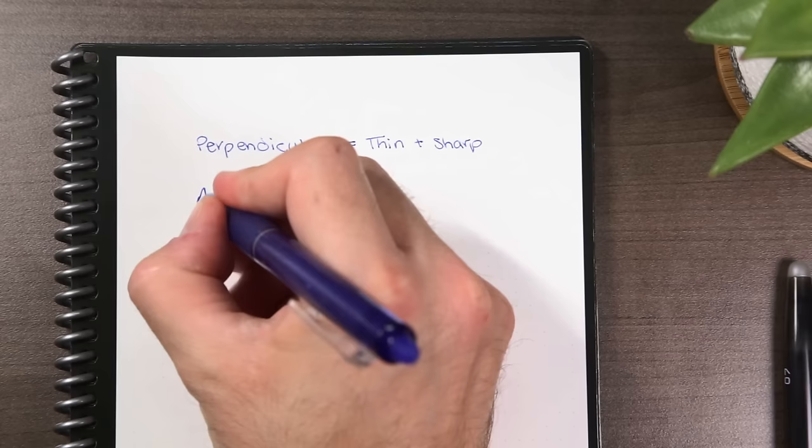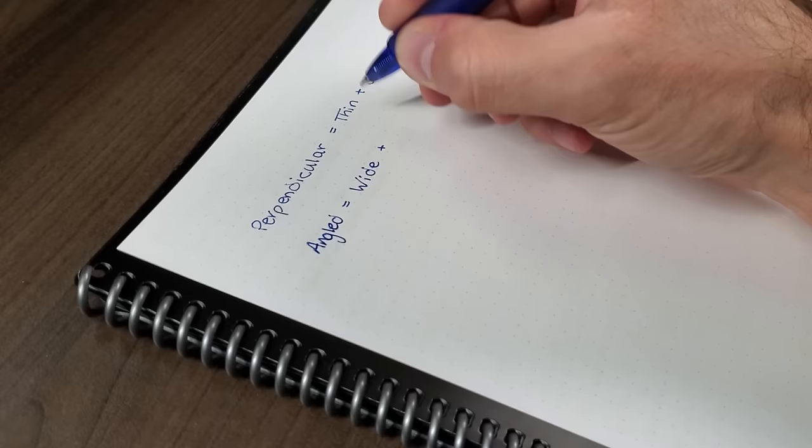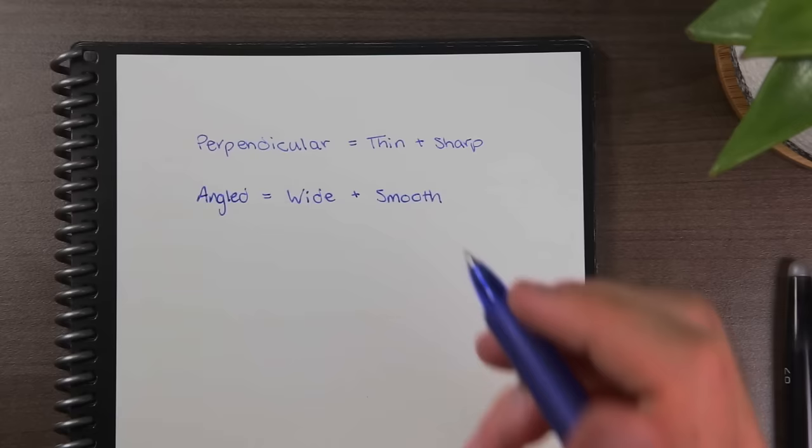Since your pen options are limited, I recommend playing around with the angle of your writing to change the pen-on-paper feel as well as the line thickness. Writing lightly and on a bit more of an angle also makes it less likely that you'll scratch the surface coating on the Everlast notebooks, which will extend their lifespan.